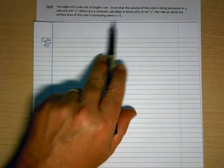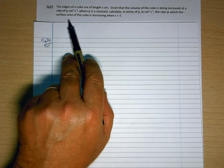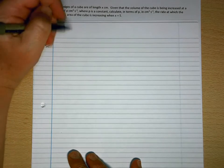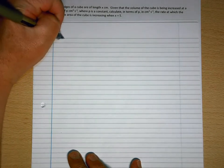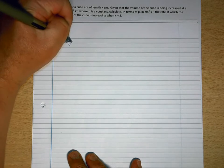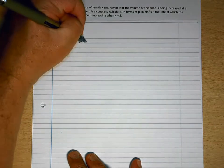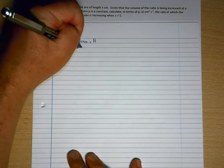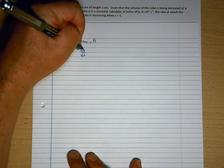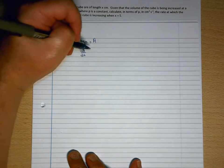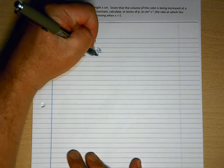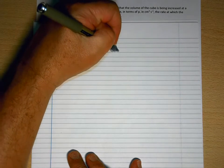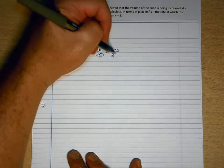So we want the rate at which the surface area of the cube is increasing. So if we call the surface area A, then we're looking for dA/dt. So using the chain rule, we know that that's going to be dA/d(something) times d(something)/dt.